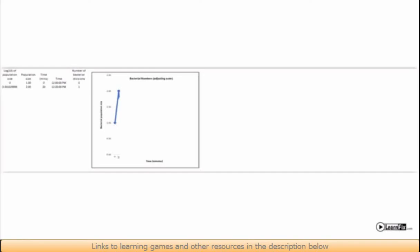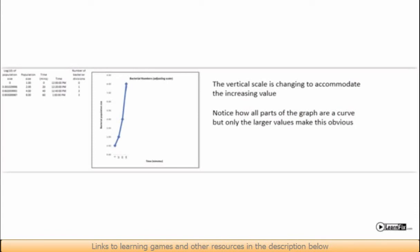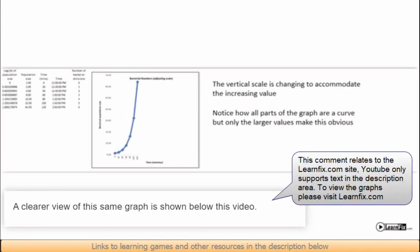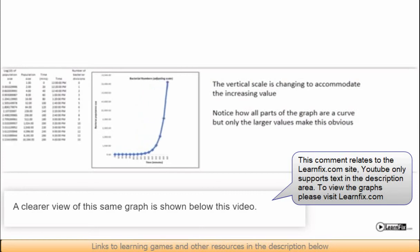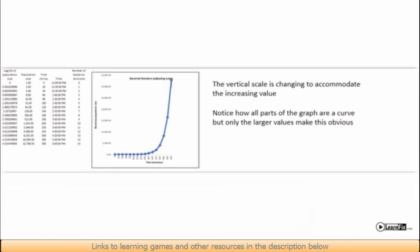This graph shows how bacterial numbers can rise from a single individual at 12 o'clock to over 2 million at 7 o'clock. When a quantity doubles, and it keeps on doubling, this is called exponential growth. And the graph of this is a steeply rising curve.